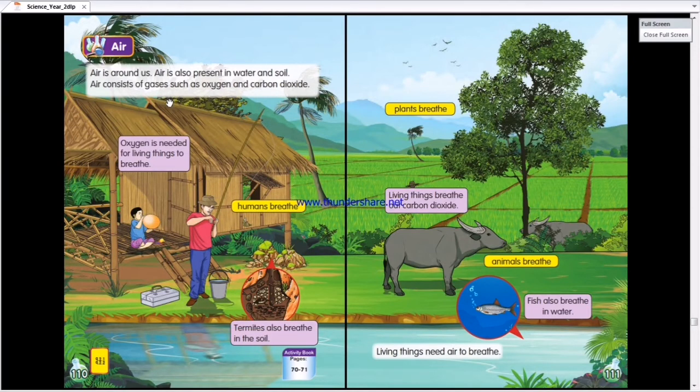Air consists of gases such as oxygen and carbon dioxide. Maksudnya kat sini, air, udara ada di seputar kita. Dalam air ni ada dua jenis gas yang paling penting. Ada juga gas lain. Tapi yang penting, oxygen and carbon dioxide.